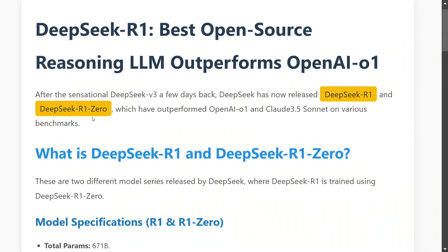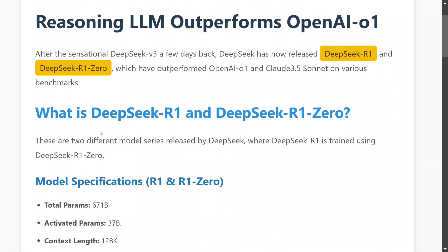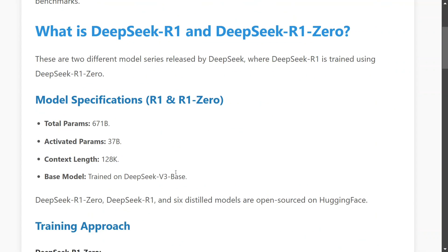The team has released two models together: DeepSeek R1 and DeepSeek R1-Zero. Both R1 and R1-Zero have 671 billion parameters, and the context length is 128K. They have been trained on the DeepSeek V3 base.